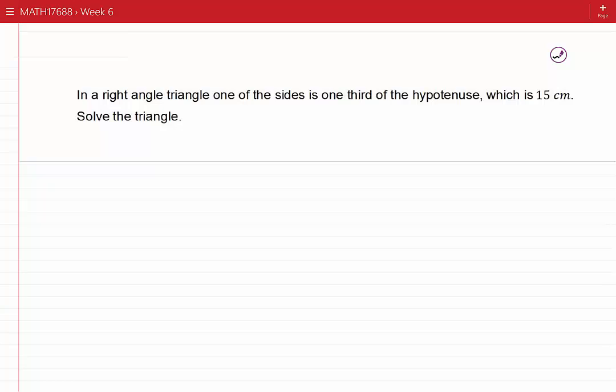In a right-angled triangle, one of the sides is one-third of the hypotenuse which is 15 centimeters. Solve the triangle. If this is our triangle, the hypotenuse is 15 centimeters. Let's assume this side is one-third of the hypotenuse, and one-third of 15 would be 5 centimeters. Let's call the right angle C and the other angles B and A.